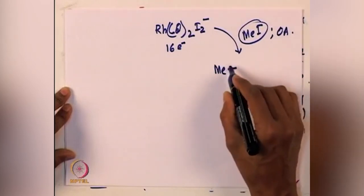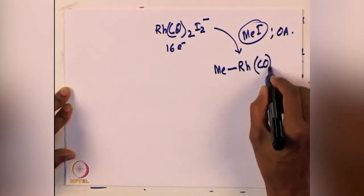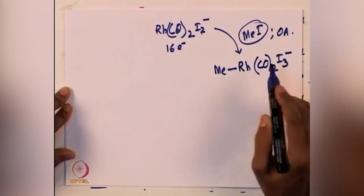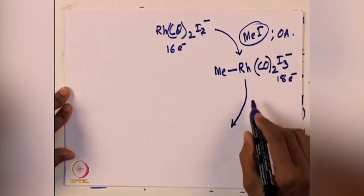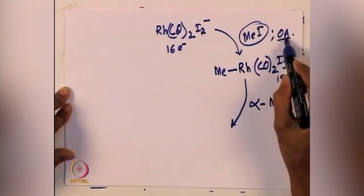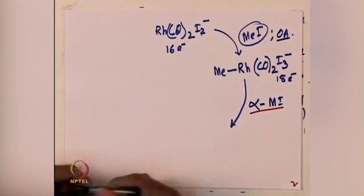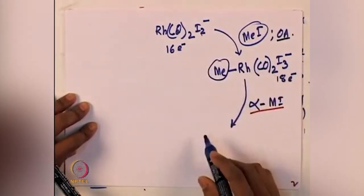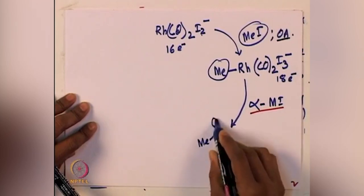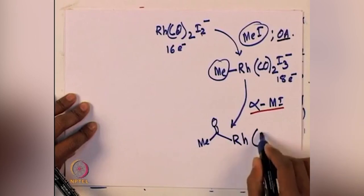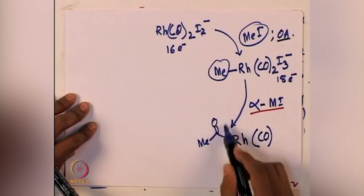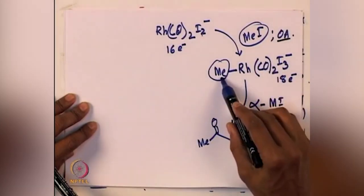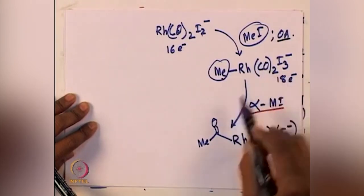Methyl iodide oxidative addition will give you the carbon-rhodium bond, carbon monoxide, and I3 minus — you started with two iodides and then have one more iodide, making it I3 minus. This is an 18-electron species. From there you can undergo alpha migratory insertion, which we have studied. The alkyl group migrates into CO, and you get the acyl equivalent formation with the metal component. One carbon monoxide is now incorporated into this acyl component, and you have I3 minus.